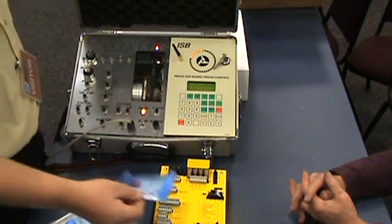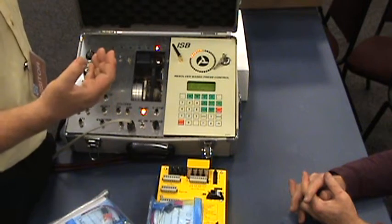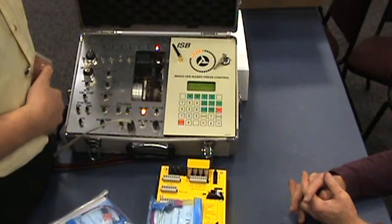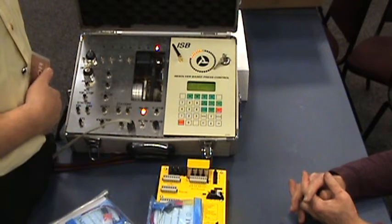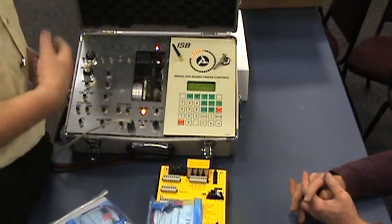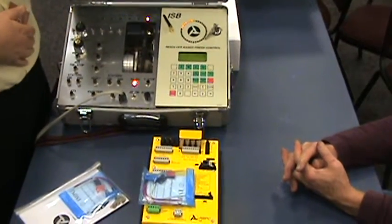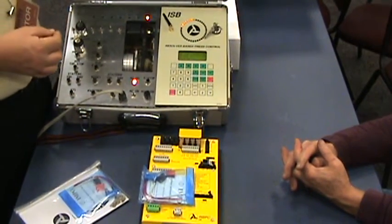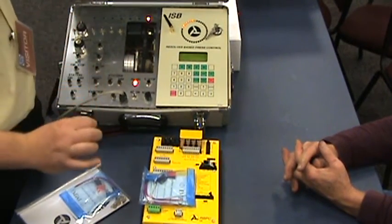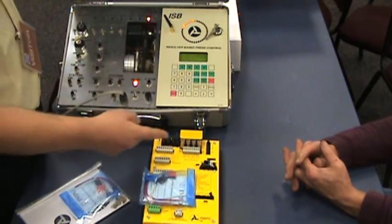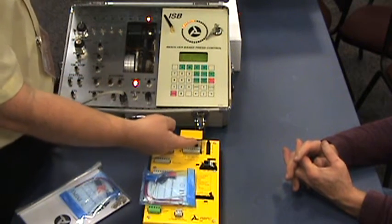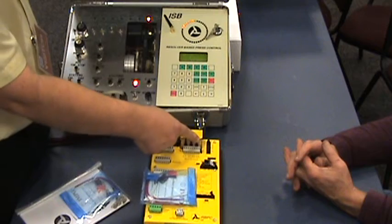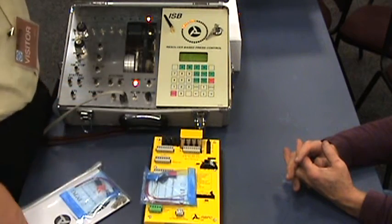It will do two things. The first thing is it suppresses the electrical surges that are created by a solenoid valve. So that's a good thing. It makes your electronics not get zapped over and over and over again by spikes. The second thing it does, which is even more significant from a maintenance point of view, is it extends the life of the relay contacts that are turning on and off that solenoid valve.